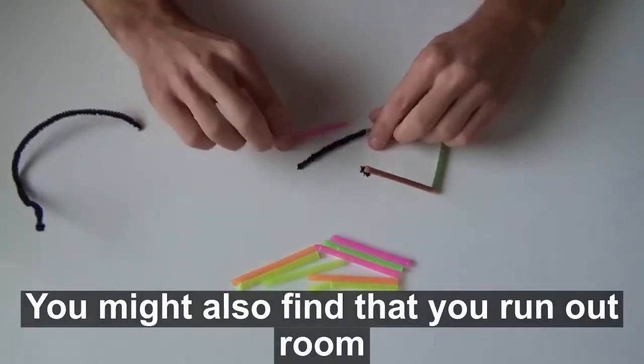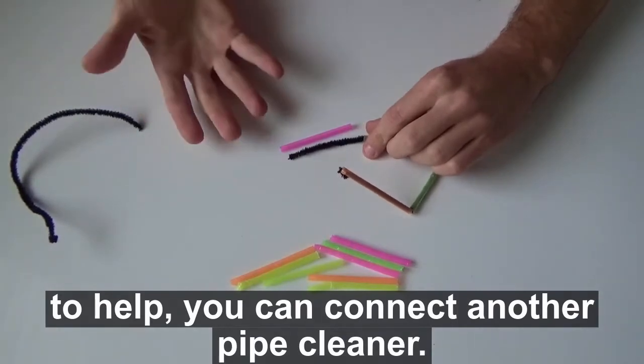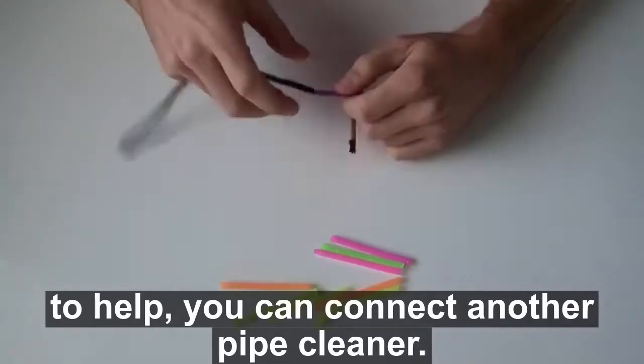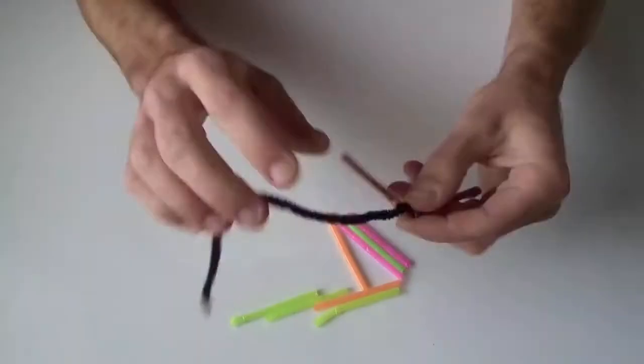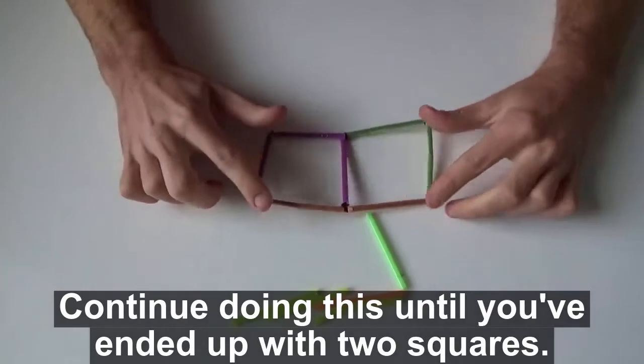You might also find that you've run out of room. To help, you can connect another pipe cleaner. Continue doing this until you've ended up with two squares.